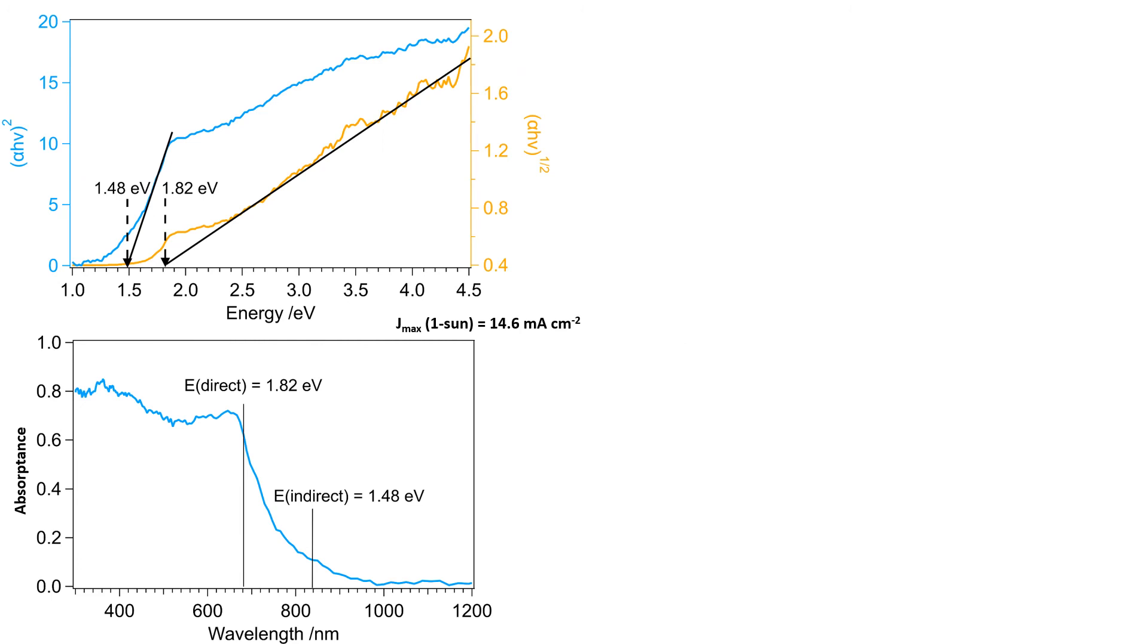We've been able to probe the optical properties of these layers again by photothermal deflection spectroscopy and find an indirect gap at 1.48 electron volts and a direct gap at 1.82 in good agreement with the literature. In the PDS spectrum, we can see significant band tailing due to defects which need to be addressed further by refinements to the processing methods. The absorptance was again used to calculate the theoretical maximum photocurrent density, which for this sample would be 14.6 milliamps per square centimeter, which makes this a really interesting and exciting material in terms of light harvesting performance.